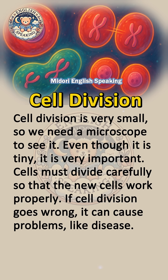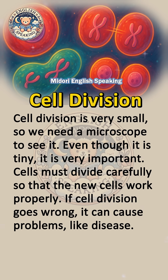Cell division is very small, so we need a microscope to see it. Even though it is tiny, it is very important. Cells must divide carefully so that the new cells work properly. If cell division goes wrong, it can cause problems, like disease.